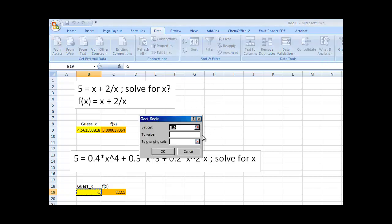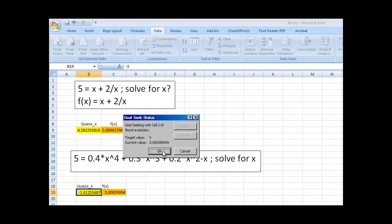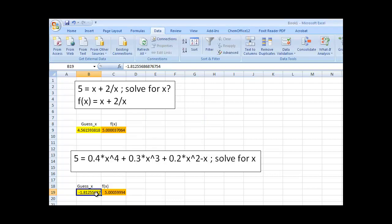So, now, if I go to goal seek. And I say, let's change the f of x equal to 5 by changing my guess block. And I found a different solution. This time, negative 1.812. Previously, it was around 1.81. Well, now, it's negative 1.81. So, the solution you get very much depends on where you start. So, you have to keep that in mind when you're working with goal seek. So, sometimes, it's useful to try multiple initial guesses as you're using the goal seek to try to get the solution.